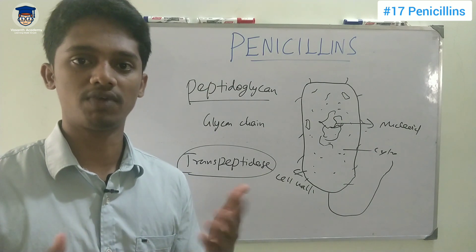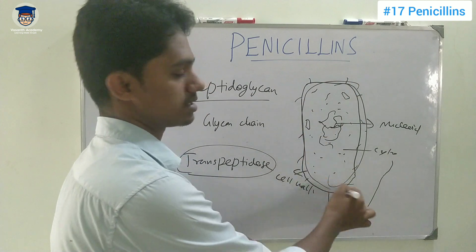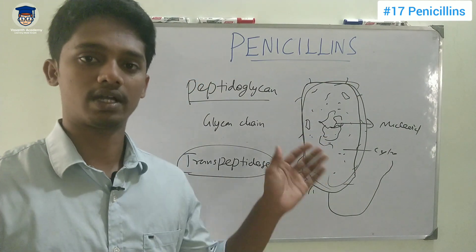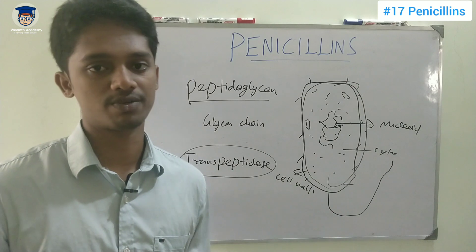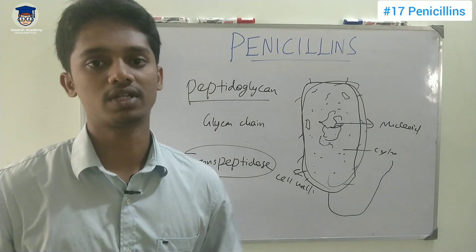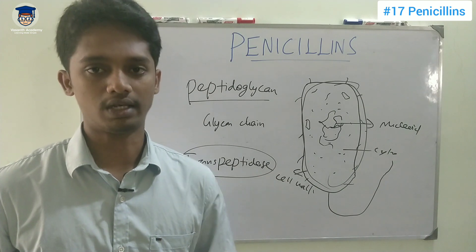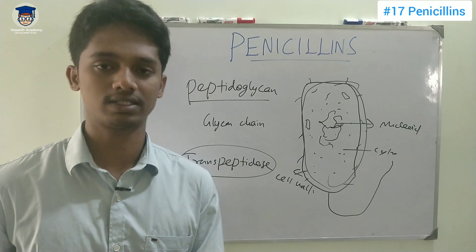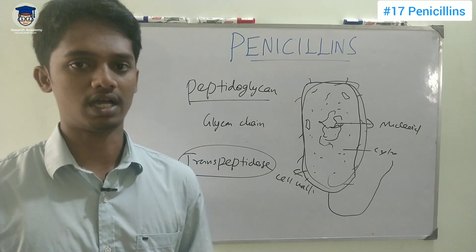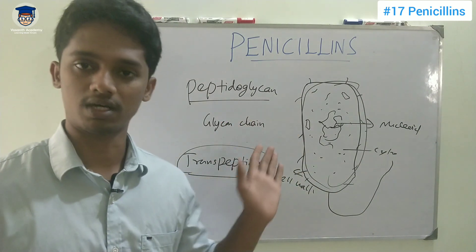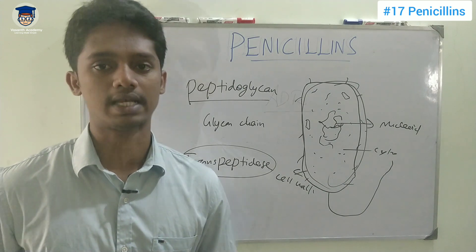Transpeptidase is the enzyme that cross-links glycan chains. Without the drug, this is a normal cell wall formation process. But if we introduce penicillin, it will go directly and bind to the enzyme, inhibiting transpeptidase. Because of this, the glycan chains are not cross-linked, and the cell wall formation becomes weak. When the cell wall is weak, the bacteria die. This is the mechanism of action of penicillin — it is a cell wall synthesis inhibitor.